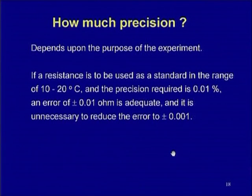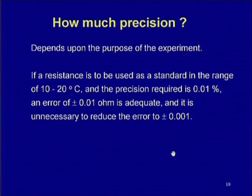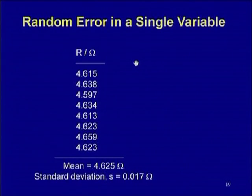How much precision is needed? It all depends on the purpose of the experiment. If a resistance is to be used as a standard in the range of 10 to 20°C and the precision required is 0.01 percent, then an error of plus or minus 0.01 ohm is adequate — it is not necessary to reduce the error to plus or minus 0.001 ohm. Unnecessarily, one need not try to reduce the error.